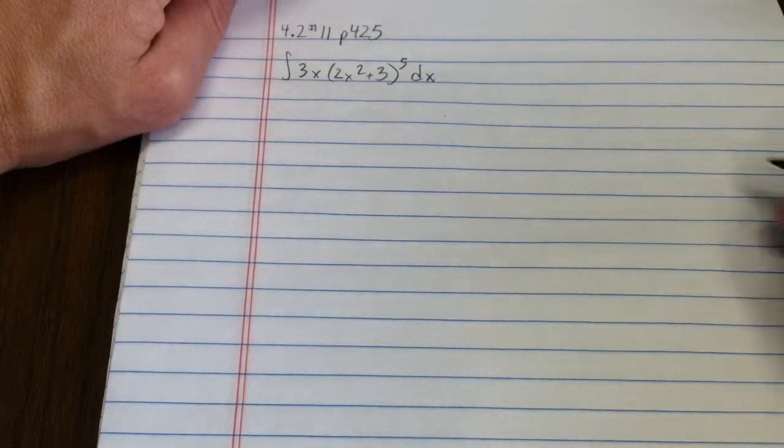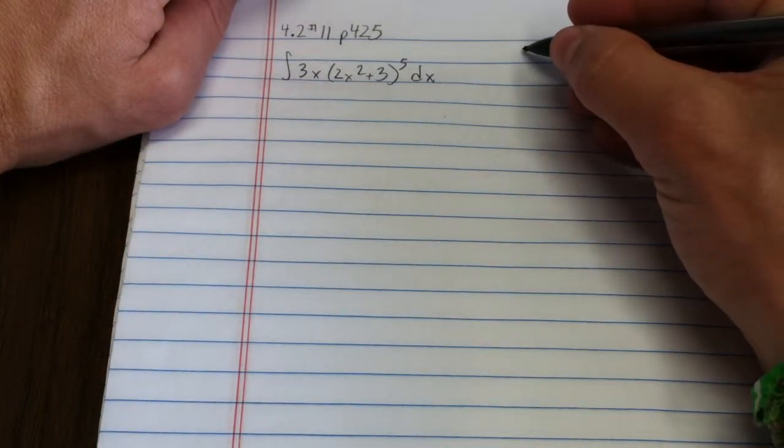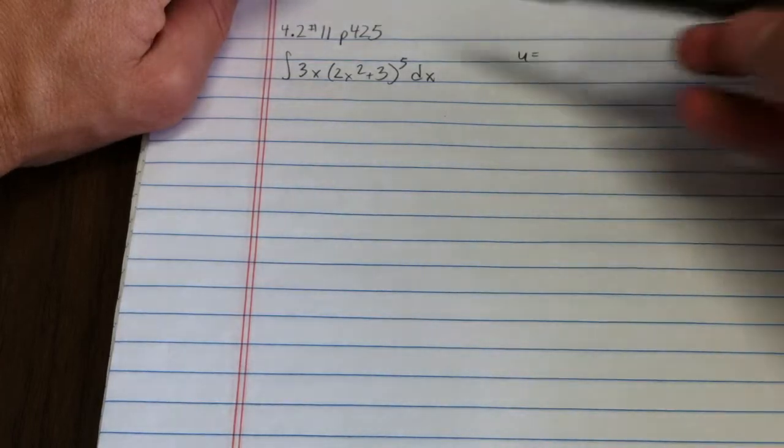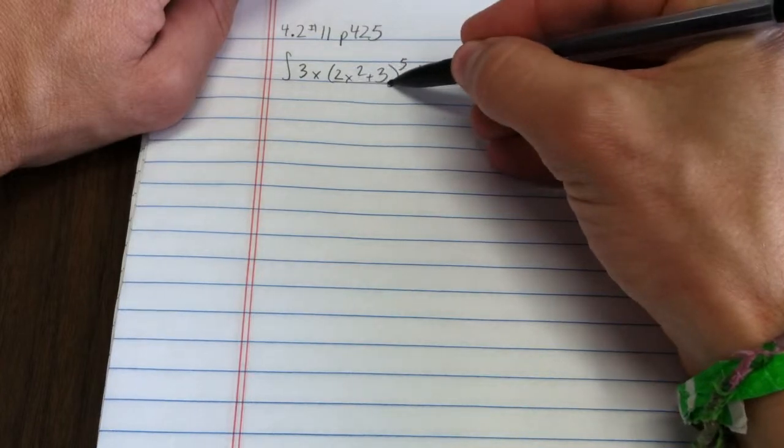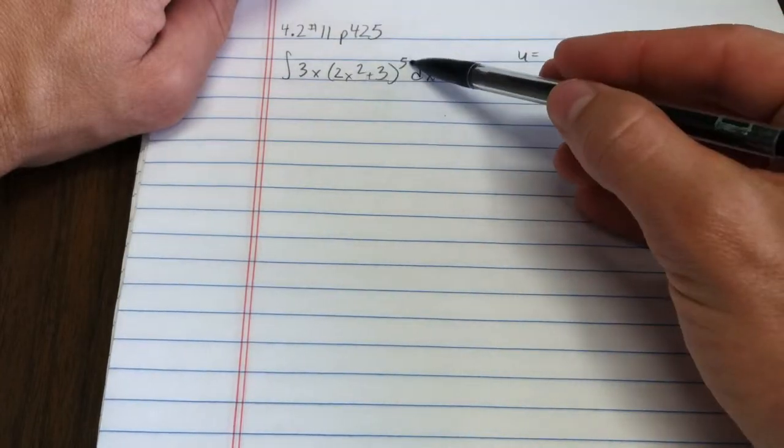A couple of different strategies for finding my u. One strategy would be look for a function inside a function. That would argue for the piece in here raised to the 5th power.